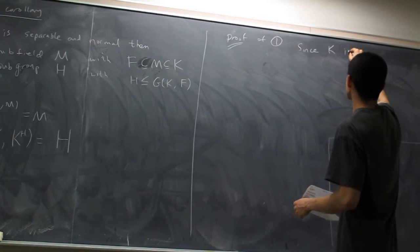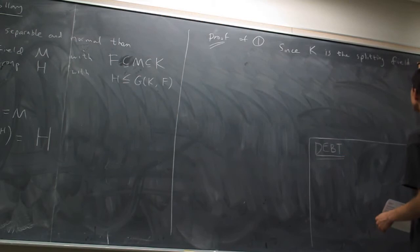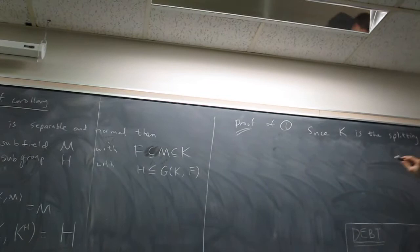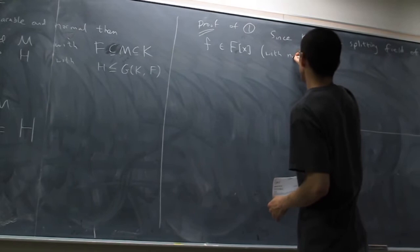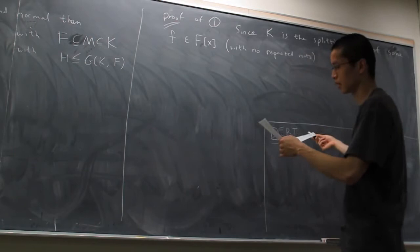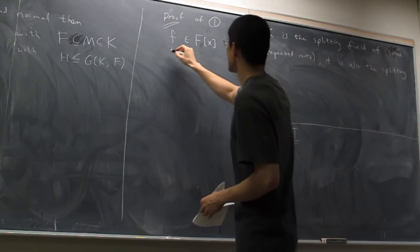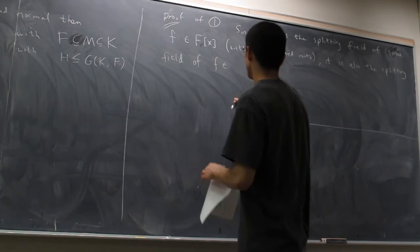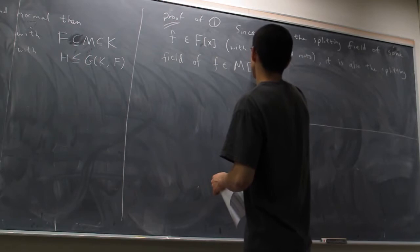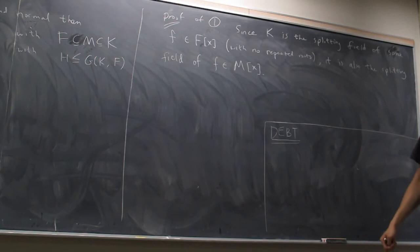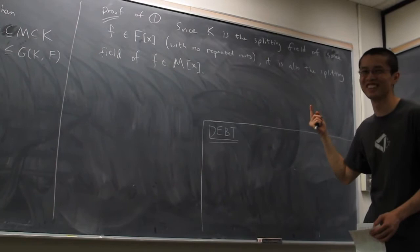Since K is the splitting field of some f in F[x] with no repeated roots, it is also the splitting field of f viewed as an element of M[x]. Is this clear? It's so obvious. Hence, by the top-to-bottom result, by the main result — and then we're done.